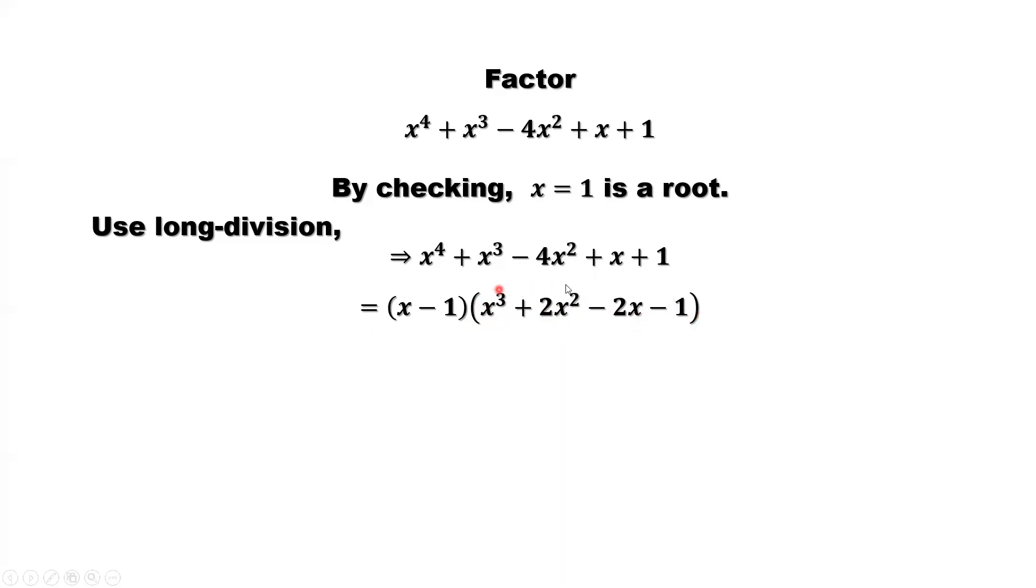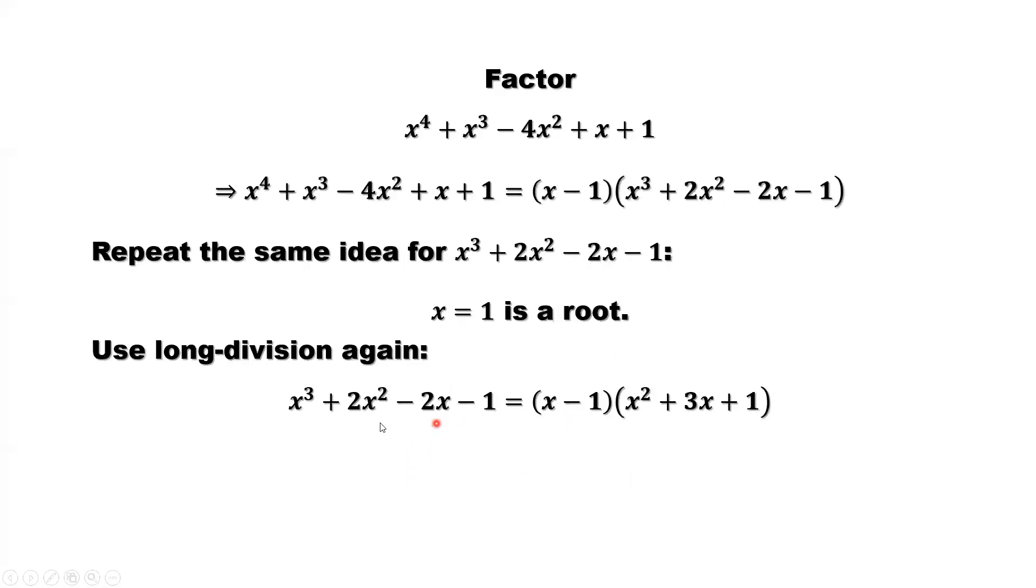So here, can we continue to factor this? We can repeat the same idea. This is the constant negative 1, and here's 1. So we can use the same idea. Find x equals 1 is a root. Plug in, you can check it, that's equal to 0. So we can factor this as this one: x minus 1 times x squared plus 3x plus 1.